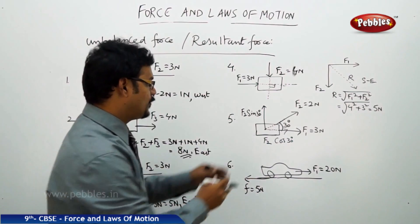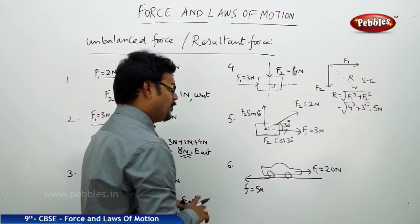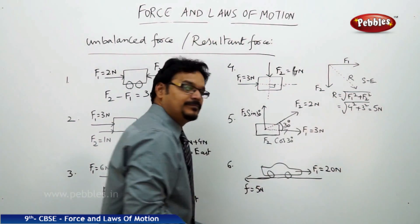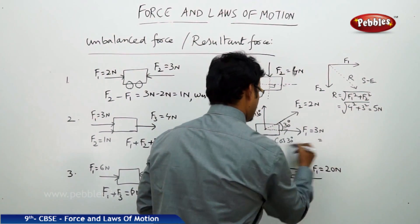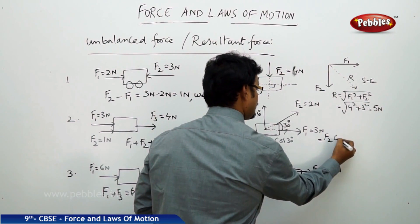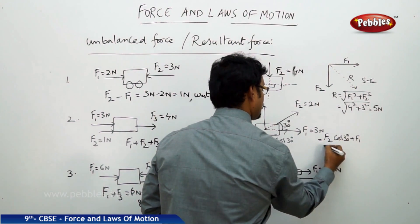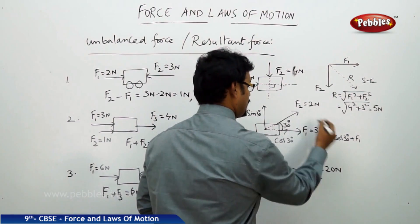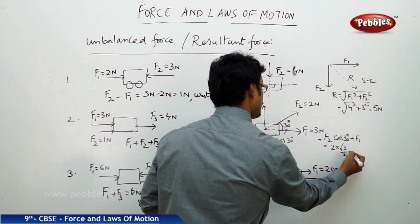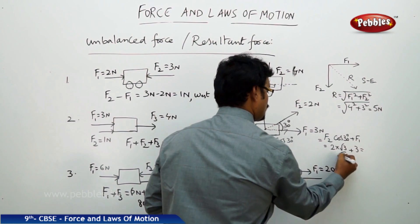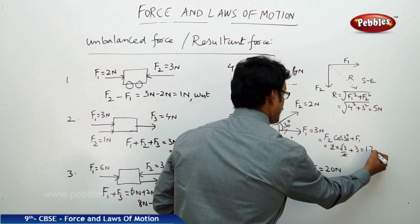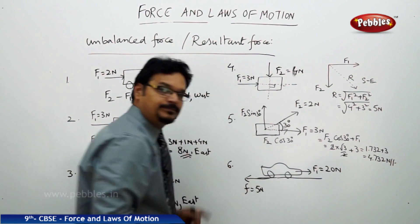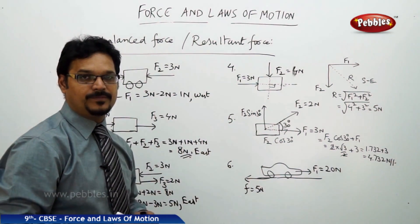Like that the force is resolved to two components. Now our interest is to find the force along horizontal. So in horizontal the total force, if you see, F2 cos 30 plus F1. Cos 30 you should know the value but I will tell you here, cos 30 is root 3 by 2. F2 is 2, 2 into root 3 by 2 plus F1 is 3. So 2 cancels, 3 plus root 3. Root 3 is 1.732 plus 3, so this is 4.732 newtons.